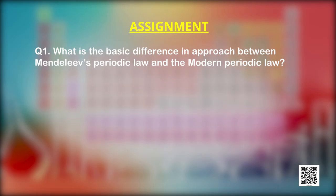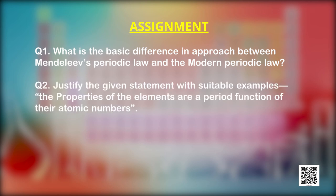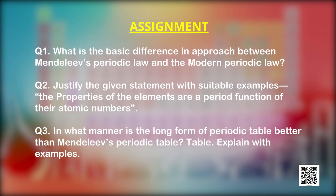Here is a task for you. Question 1: What is the basic difference in approach between Mendeleev's Periodic Law and the Modern Periodic Law? Question 2: Justify the statement 'The properties of the elements are a periodic function of their atomic numbers' with suitable examples. Question 3: In what manner is the long form of the periodic table better than Mendeleev's Periodic Table? Explain with examples.